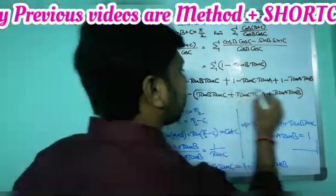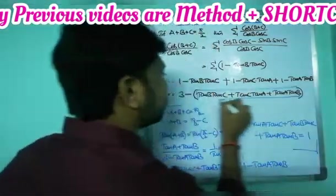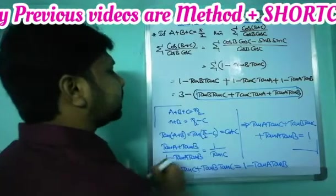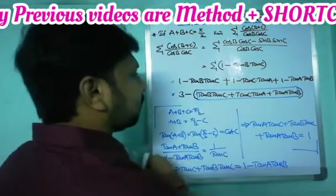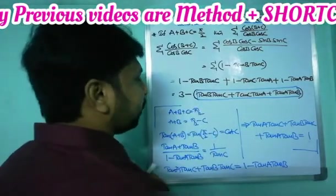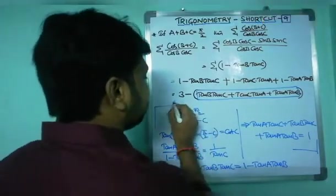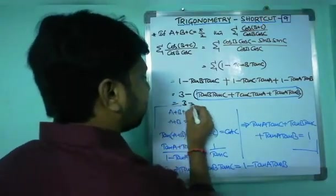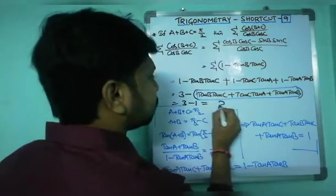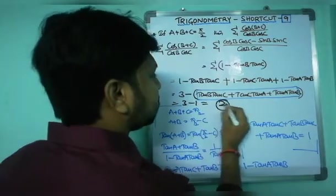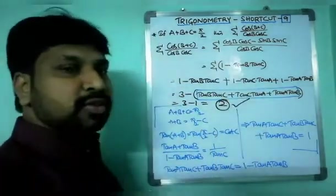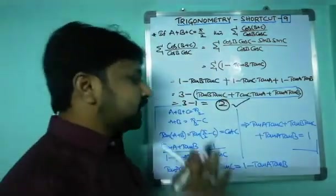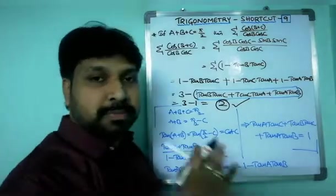So in our expression, I'm going to substitute 1 for that quantity. The result is 3 minus 1, which equals 2. That is your answer. This completes the method.